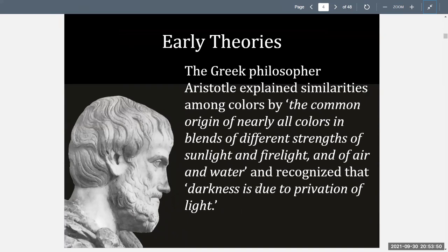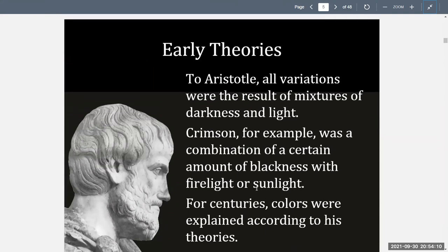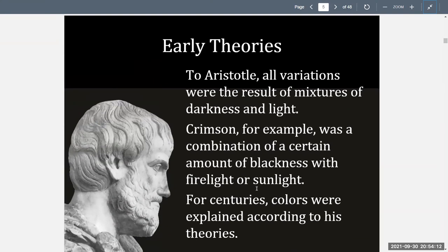The Greek philosopher Aristotle explains similarities among colors by the common origin of nearly all colors in blends of different strengths of sunlight and firelight, and of air and water, and recognized that darkness is due to the privation of light. To Aristotle, all variations were the result of mixtures of darkness and light.